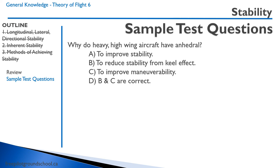Why do heavy high-wing aircraft have anhedral? Remember, anhedral means the wingtips go down compared to the wing roots. Option A, to improve stability — no, that's not correct; dihedral improves stability and anhedral has the opposite effect. Option B, to reduce stability from keel effect — this is correct, because heavy cargo aircraft already have a massive amount of keel effect. This leads to Option C, to improve maneuverability — the high keel effect would make the aircraft very stable but not very maneuverable. So answers B and C are correct, making D the answer. That concludes this lesson on Theory of Flight on stability. Thanks for joining me and we'll see you on our next lesson.